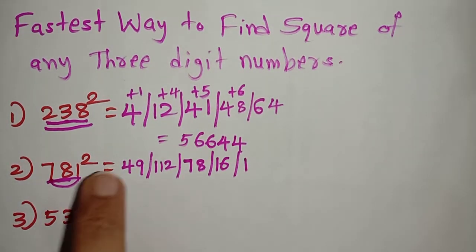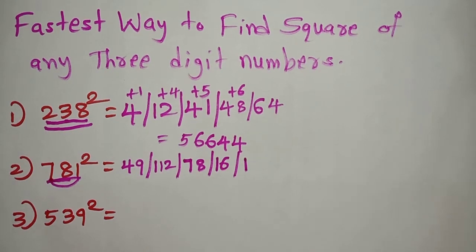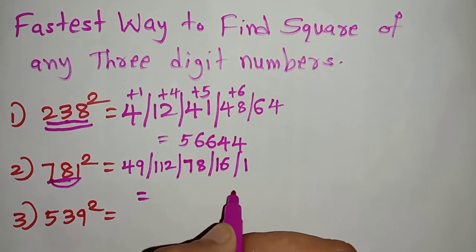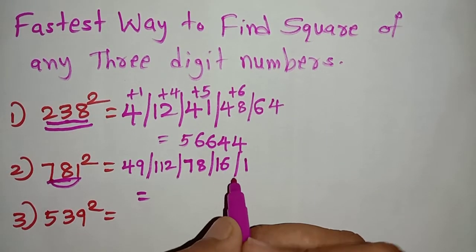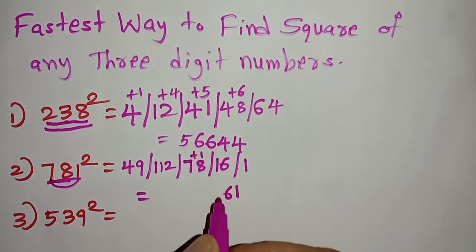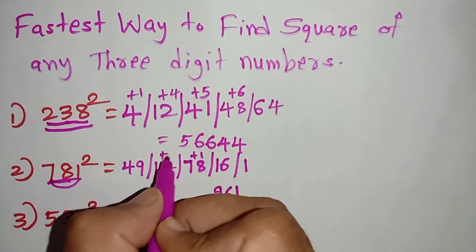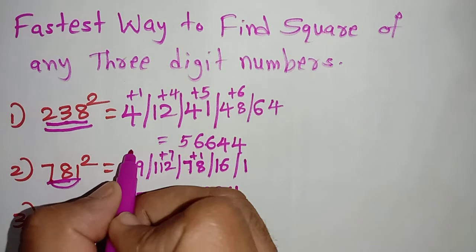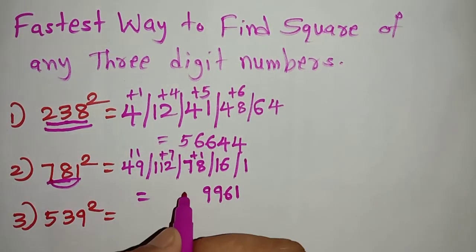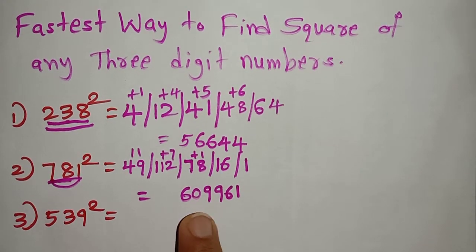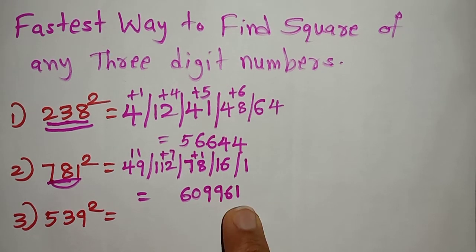So there are 5 steps — remember these 5 steps. Now start adding. Write 1 as it is. Then in 16, write 6 and carry 1. Then 78 plus 1 is 79 — write 9 and carry 7. Then 112 plus 7 is 119 — write 9 and carry 11. Then 49 plus 11 is 60. So the second answer is 609,961. You can check this with a calculator.